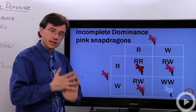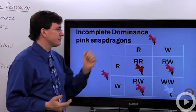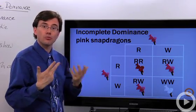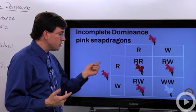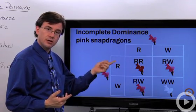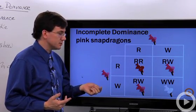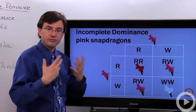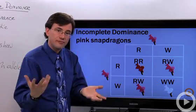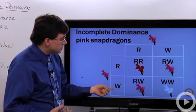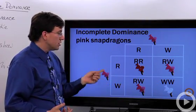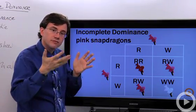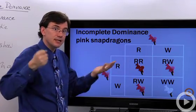The standard example of incomplete dominance is a kind of flower called a snapdragon. With snapdragons, you can have red, white, or pink flowers, and it turns out the pink ones are blends between the red and the white alleles. So if you have big R, big R, you will be a red flower. If you're big W, big W, you'll be a white flower. If you're big R and W, you'll be pink — not little bits of red and little bits of white. If you get in close and look at the flower up close, it's pink. They've blended.